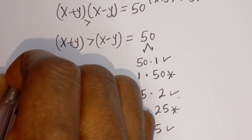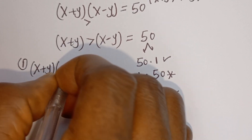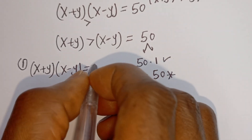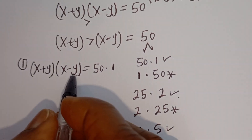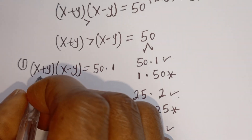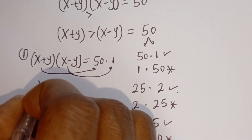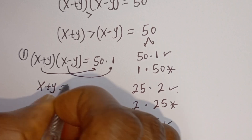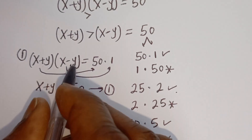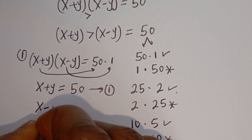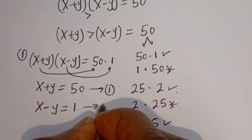For the first case, our equation becomes (x+y)(x-y) = 50 × 1. Since x plus y is greater than x minus y, x plus y takes 50 and x minus y takes 1. So we have equation 1: x plus y equals 50, and equation 2: x minus y equals 1.